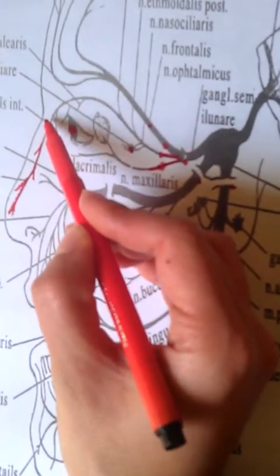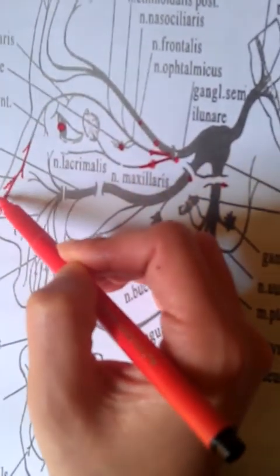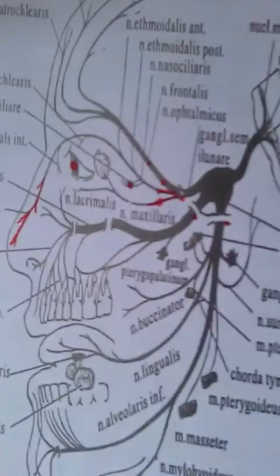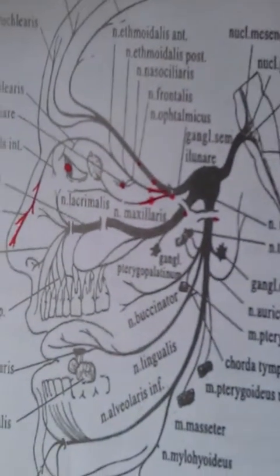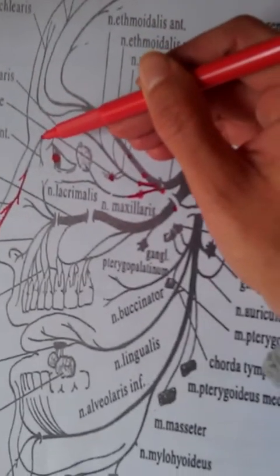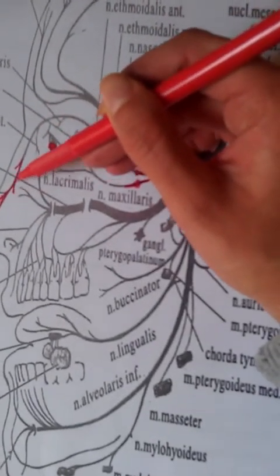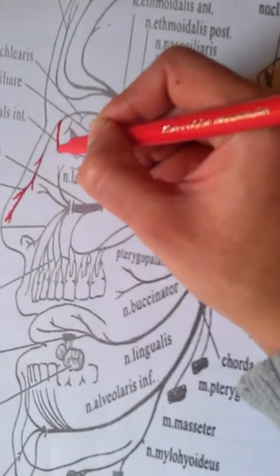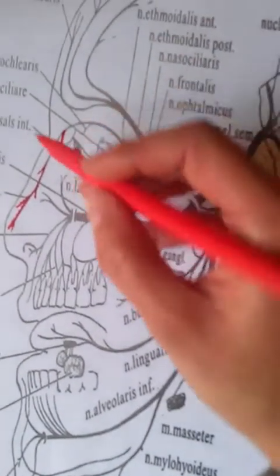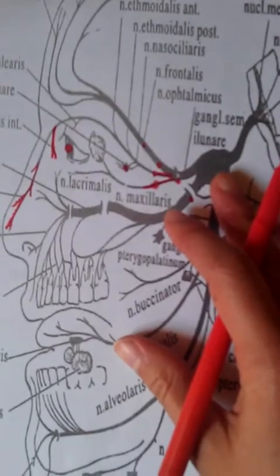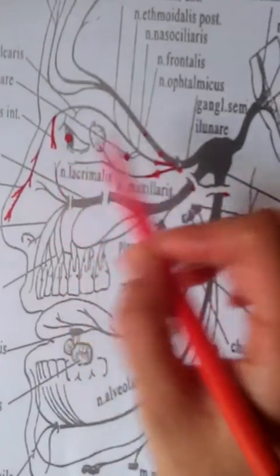It innervates the external part of the nose, the skin. And then we have also internal, these small branches here, small branches which are innervating the mucosal part of the nose in this area.